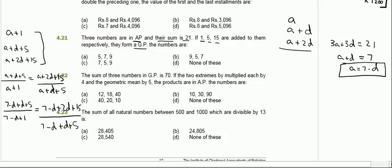Solving this: 7 and 5 give 12, and the d terms cancel, giving 12 over (8 minus d) equals (22 plus d) over 12.